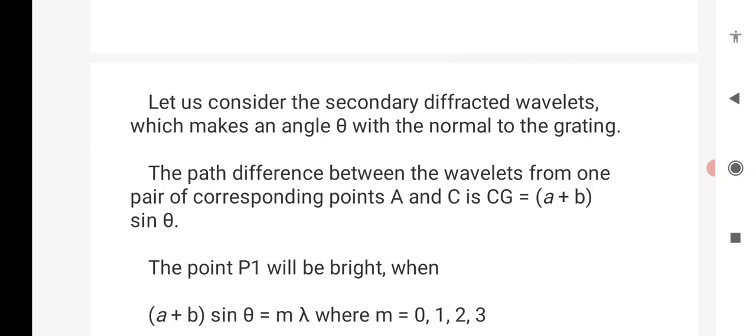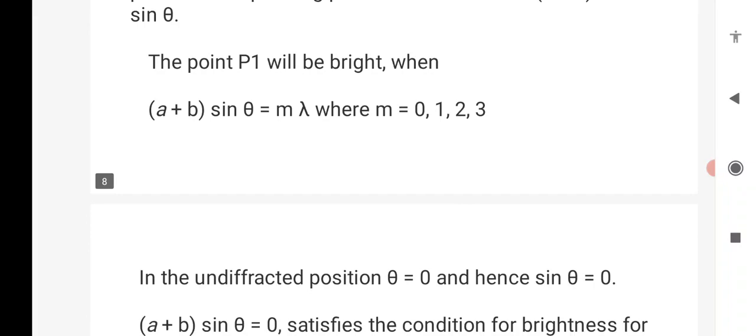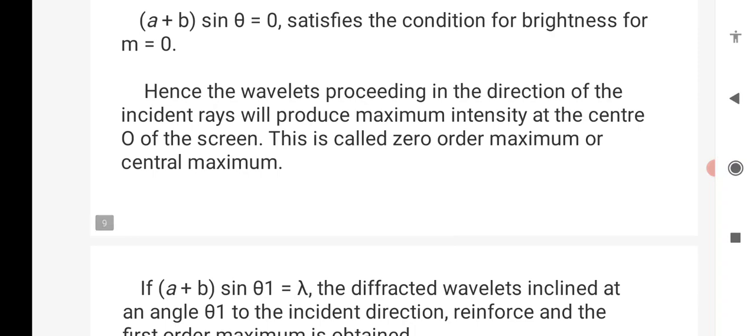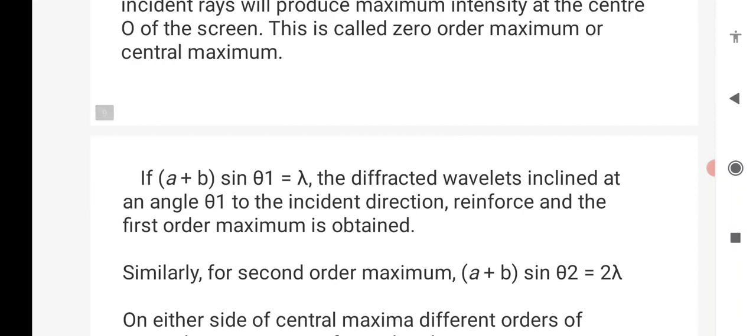Point P1 will have a bright maximum intensity when A plus B sin theta equals M lambda, where M is an integral value, that is 0, 1, 2, 3. For the undiffracted position, that is theta equals 0, we know that sin 0 equals 0. When we substitute theta equals 0, we get M equals 0, which produces maximum intensity at the center of the screen.